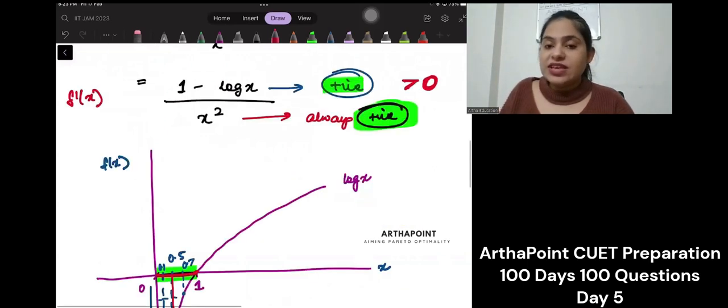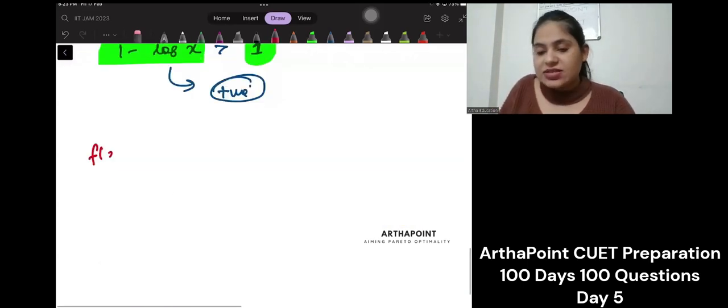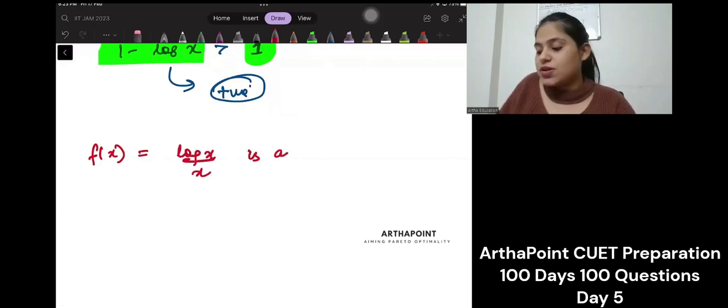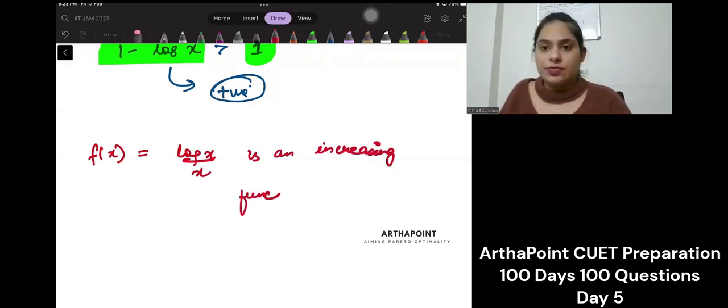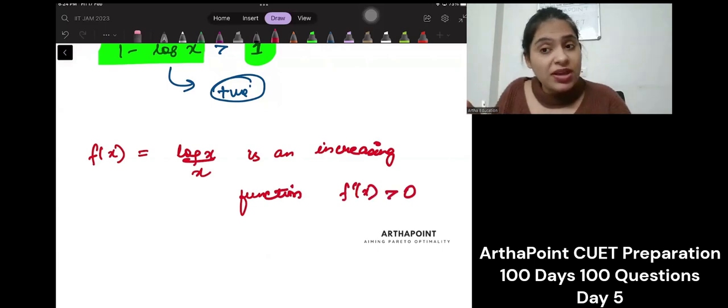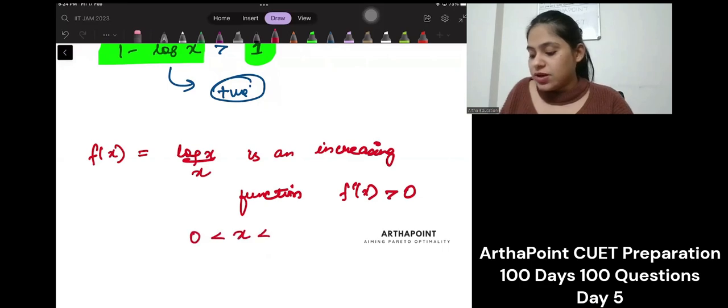So, f'(x) - my numerator is positive, denominator is positive. So, this entire thing is greater than 0. So, we can say that f(x) = log x by x is an increasing function because we saw that f'(x) is greater than 0. But increasing in which domain? We found it to be increasing when x is between 0 and 1.